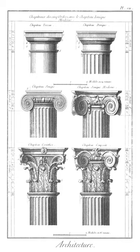Bulwark: barricade of beams and soil used in 15th and 16th century fortifications designed to mount artillery. On board ships the term refers to the woodwork running round the ship above the level of the deck. Figuratively it means anything serving as a defense. Dutch loanword: bulwark.